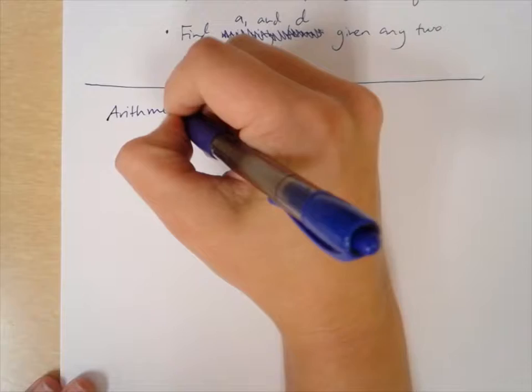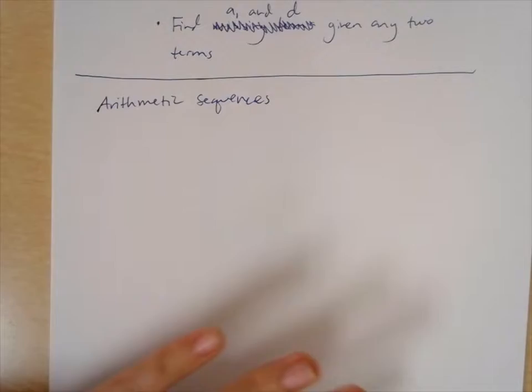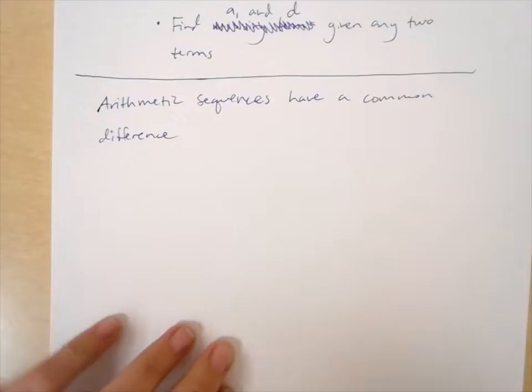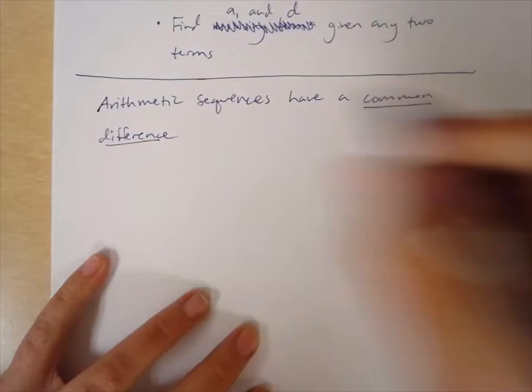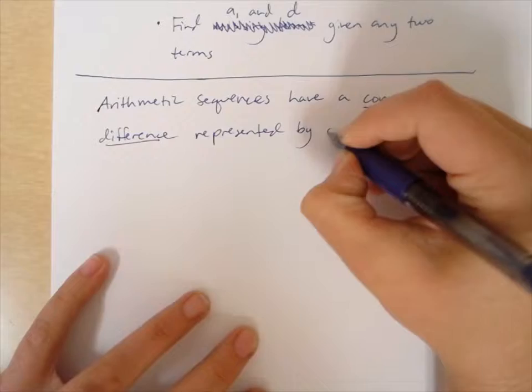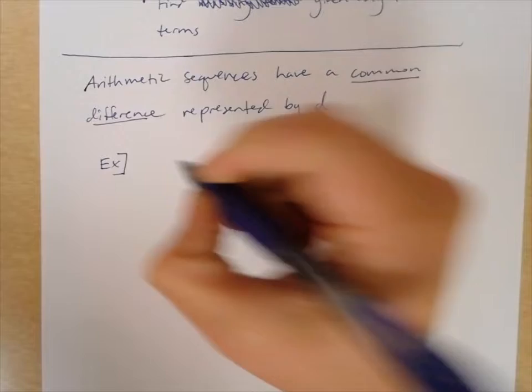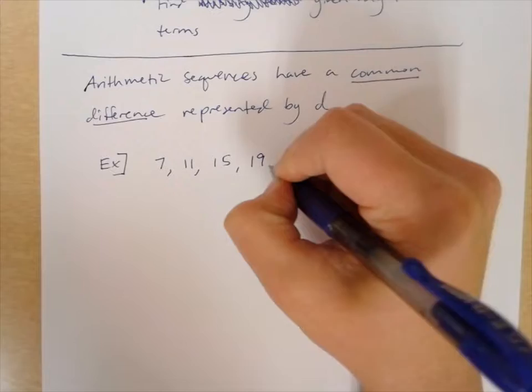Let's start by talking about what arithmetic sequences are. Arithmetic sequences have a common difference — that's important. The common difference is represented by d. Basically, there's a bunch of numbers that follow a pattern, and we call that pattern the common difference. For example, if we have the sequence 7, 11, 15,